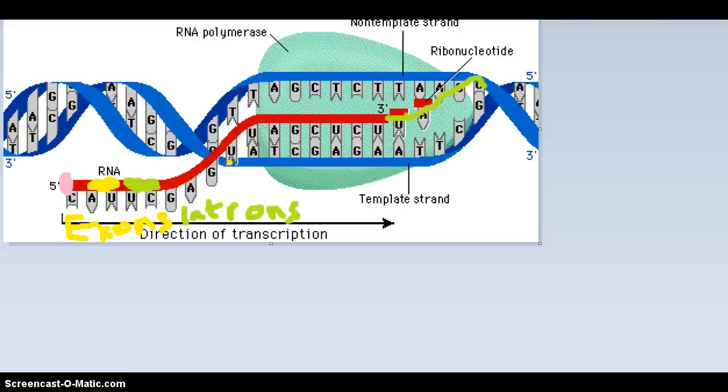Now, elongation, the second step, is when it starts reading and making the opposite. And that's when the RNA, the pre-mRNA, is being made.